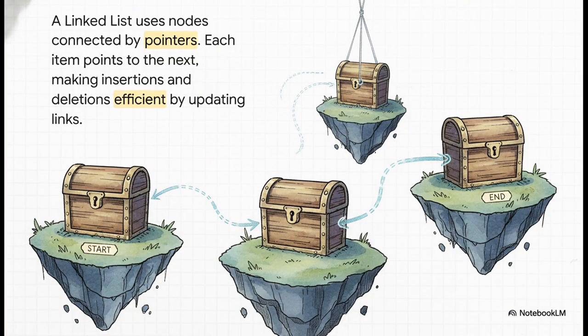And that big limitation leads us to a much more flexible solution, the linked list. Forget that rigid bookshelf. A linked list is more like a scavenger hunt. Each item on your list holds a little clue that points you directly to the next item. So if you want to add something new in the middle, you just change two of those clues to link it right into the chain. Removing something is just as easy. It's amazingly flexible for lists that are constantly changing.